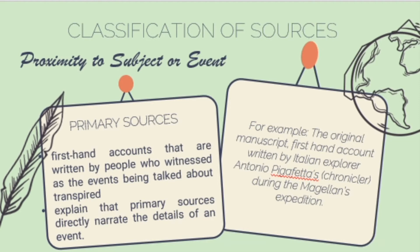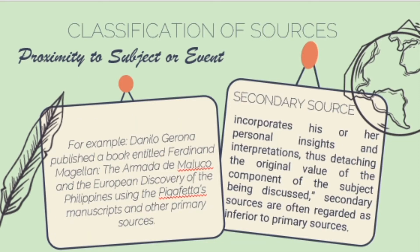Secondary sources, on the other hand, are already derivatives of primary sources which may provide interpretations, reflections, and criticisms. Textbooks that compile and provide interpretations and criticisms are great examples of secondary sources. A secondary source incorporates the historian's personal insights and his or her own interpretations, thus detaching the original value of the subject being discussed.